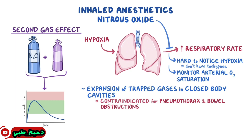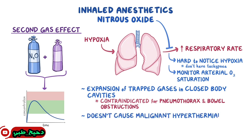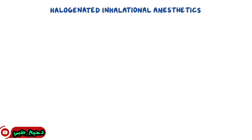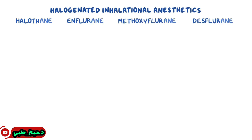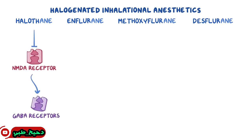The silver lining is nitrous oxide is the only inhaled anesthetic that doesn't cause malignant hyperthermia, which is an important side effect we'll talk about later. Next, we have the halogenated inhalational anesthetics, and their suffix is "-ane". Common medications in this class include halothane, fluorane, methoxyflurane, and desflurane. These act as NMDA receptor antagonists but also as GABA receptor agonists.